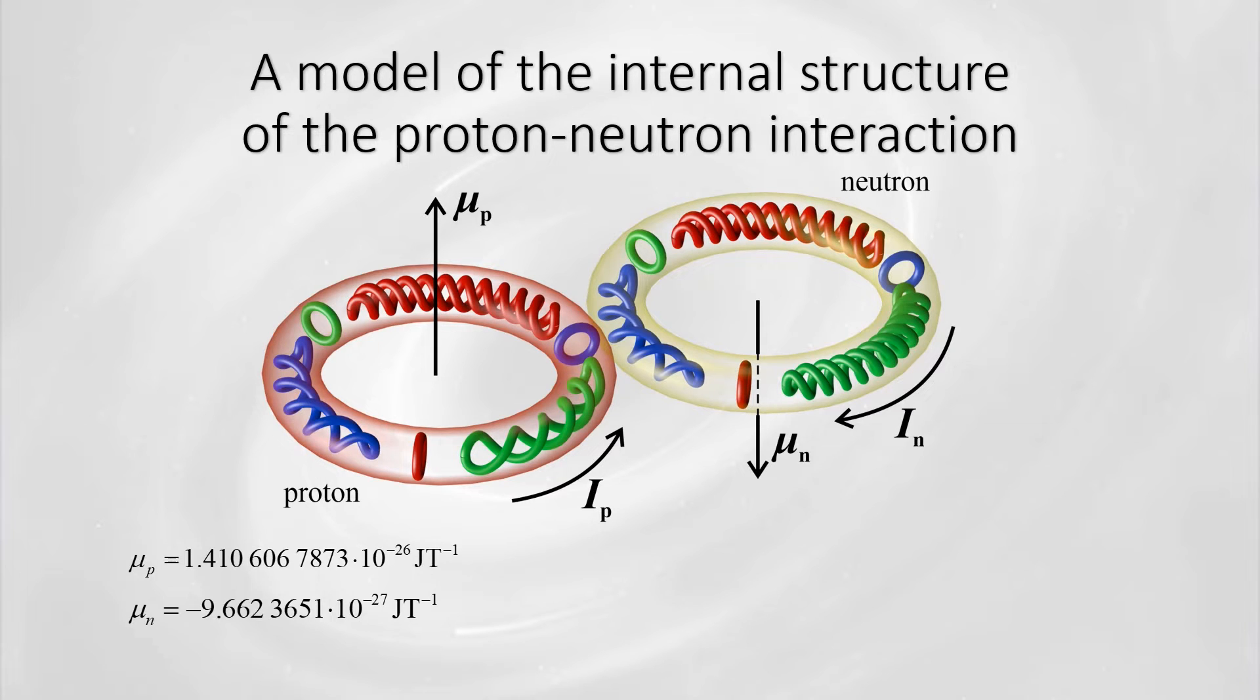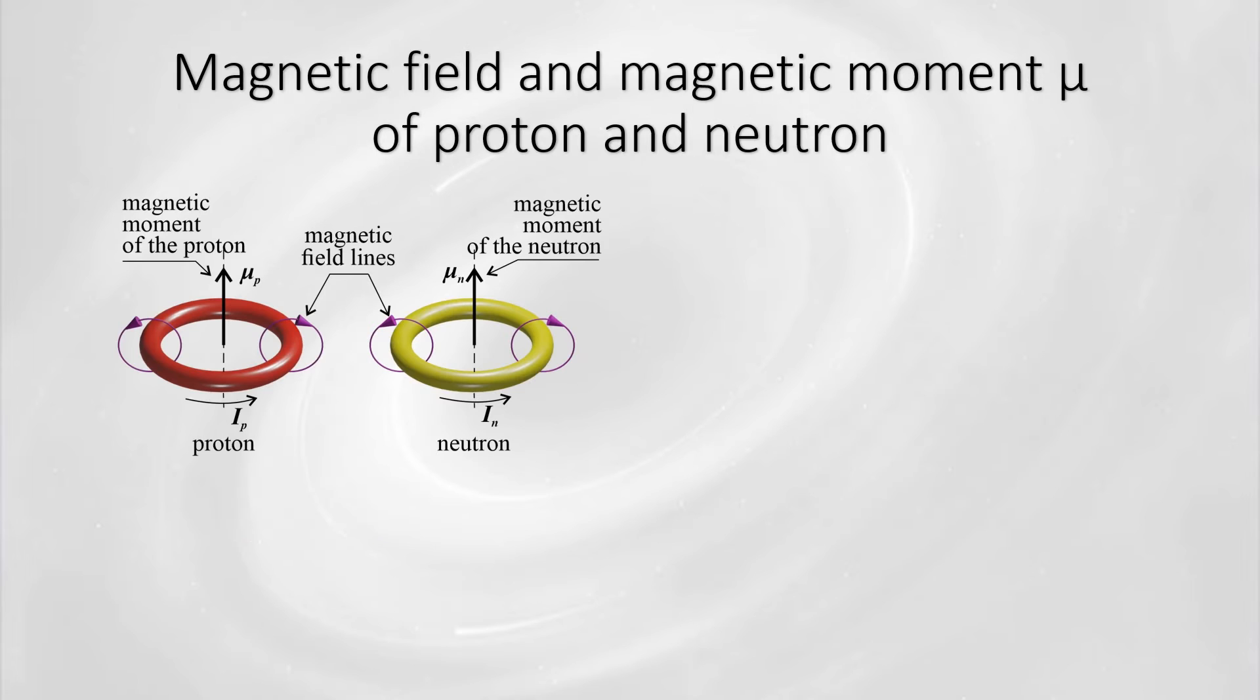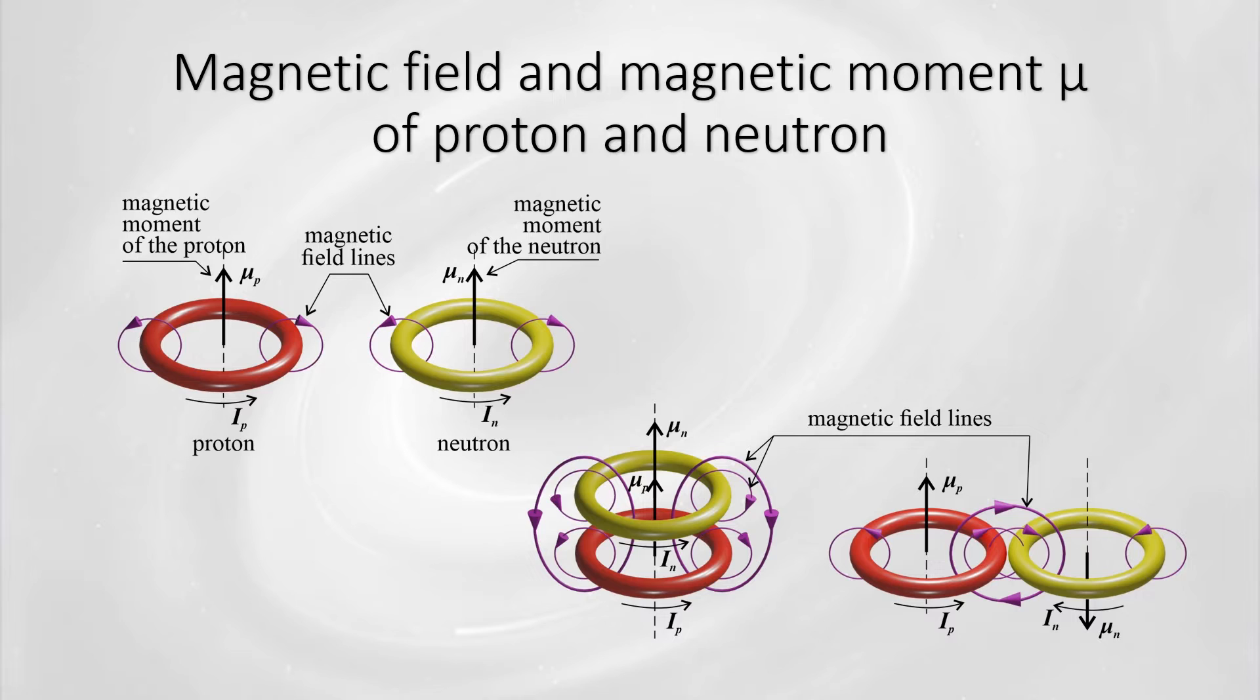The magnetic fields of the rings of protons and neutrons interact with each other in a manner similar to the magnetic fields of ring-shaped permanent magnets. Rings of permanent magnets with parallel magnetic moments on a common axis attract each other just as rings with antiparallel magnetic moments off the common axis do. Similarly, a proton and a neutron placed on a common axis with parallel magnetic moments attract each other. Proton and neutron with antiparallel magnetic moments placed next to each other also attract each other.